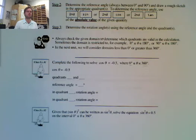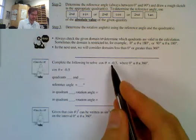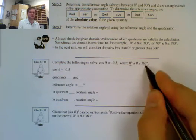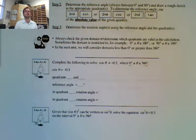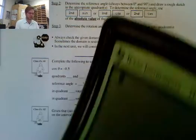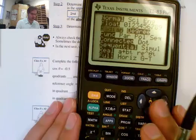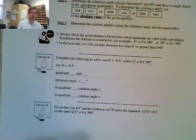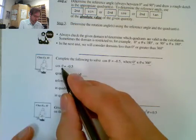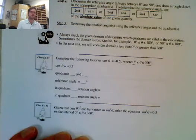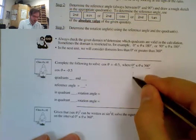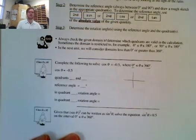It says complete the following to solve cosine of theta equals negative 0.5, where we're between 0 degrees and 360 degrees. I'm going to make sure we're in degrees mode on our calculator — go to mode and confirm degrees. So we want cos of negative 0.5. The first step is to figure out which quadrants the angle is in.